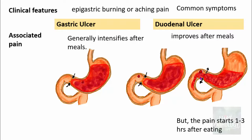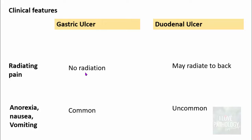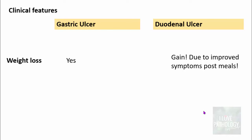Another important feature of duodenal ulcers is radiating pain to the back, which is not seen in gastric ulcers. Anorexia, nausea, and vomiting are more common in gastric ulcer than duodenal ulcers. Regarding weight loss: gastric ulcer patients eat less due to fear of aggravating pain, leading to weight loss. Duodenal ulcer patients eat more because symptoms improve post-meals, so weight gain is common in duodenal ulcers.